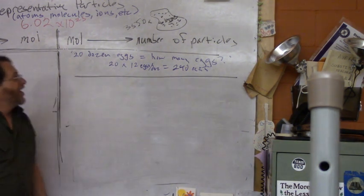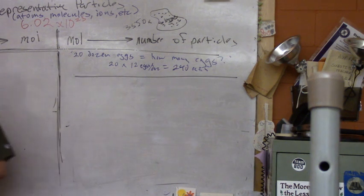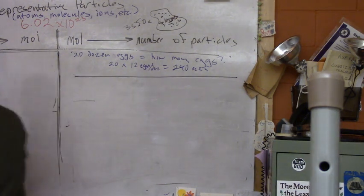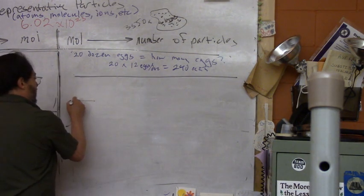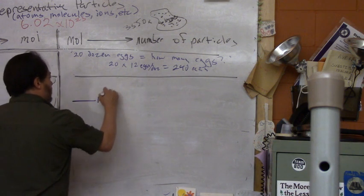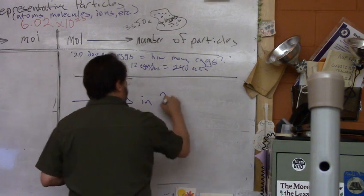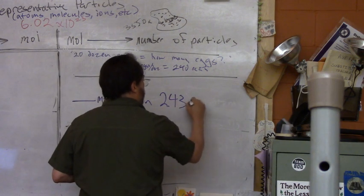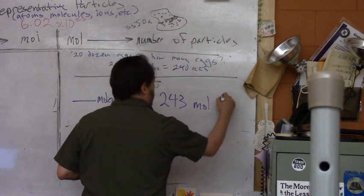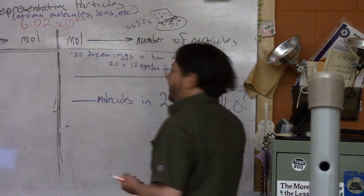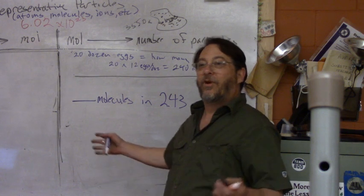The problem we'll do is: how many molecules in 2.43 moles of H2O? With problems like this, it doesn't really matter what the particle is. If you're told a number of moles and you have to figure out the number of particles, it's always the same.